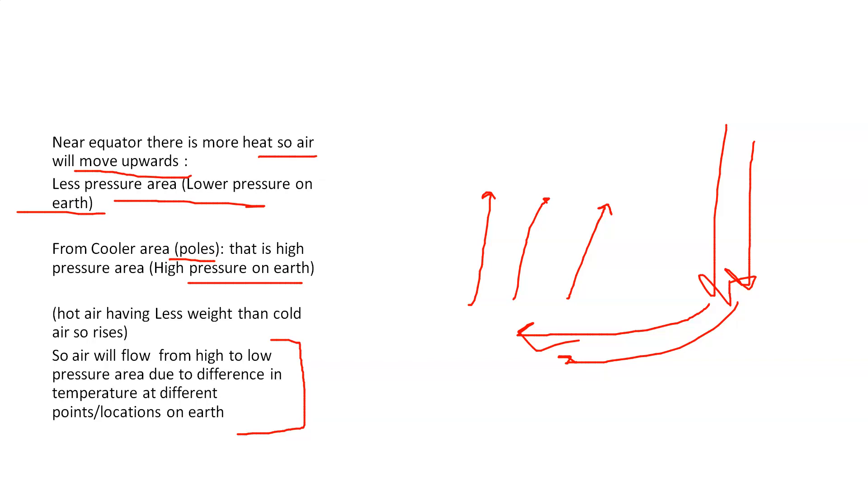So why does the wind flow? The first reason is the movement of air from high to low pressure area due to difference in temperature at different points and locations on the earth.